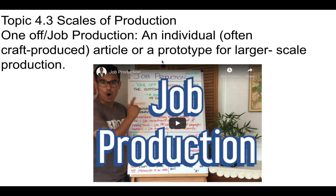When we're talking about job production or one-off production, you're really making one thing — an individually crafted article or prototype — and then you might use that to help scale up to a larger scale. A good example would be ordering a custom cake: they're going to make that one cake for you, not the same cake over and over. Or you might go to a tailor and have a suit or dress made that fits only you — that's a one-off production.